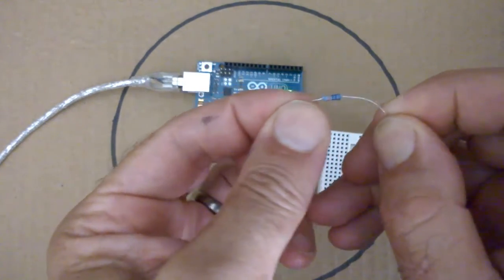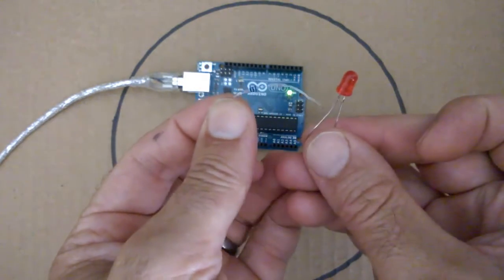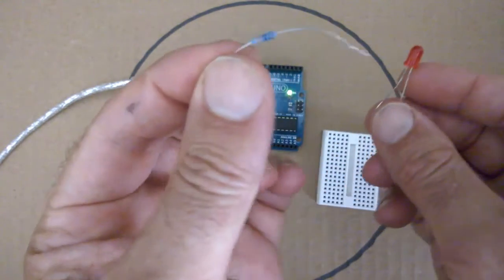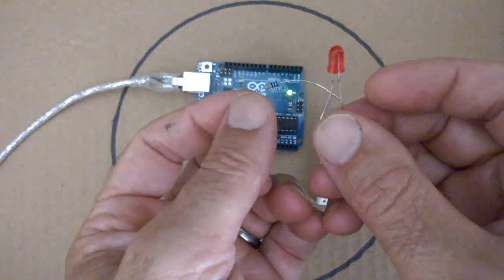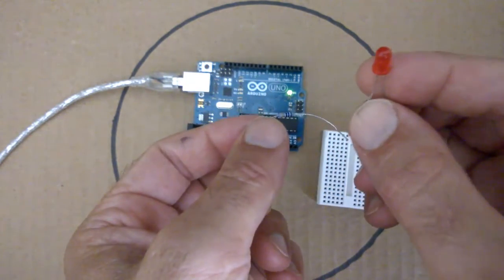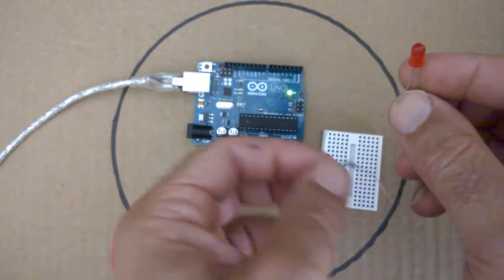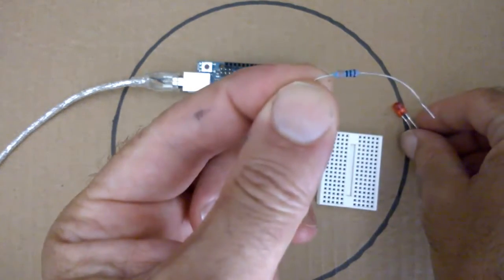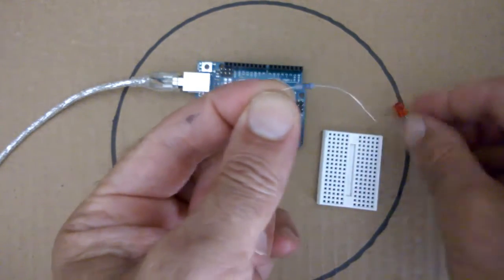Now we need the resistor to limit the current that will flow through our LED. Without a resistor we run the risk of burning out our LED, an LED can only take so much current before it will burn out. So this resistor is there to protect our LED.